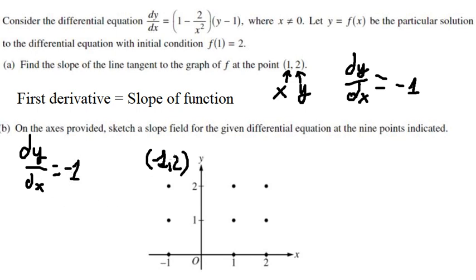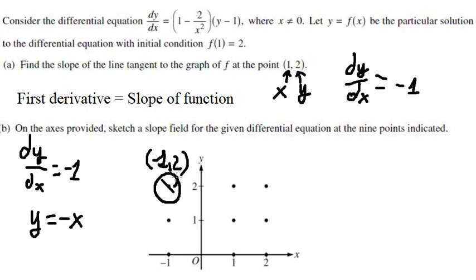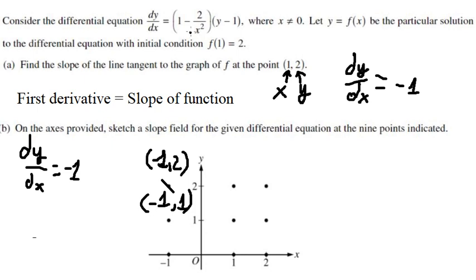So at negative 1, the line will go like this. This is about the slope of y equals to negative x, because the slope here is about negative 1. So we just draw the small line like y equals to negative x. Now for the next point, negative 1 and positive 1, we put those values here and we get dy over dx equals to 0, so the line will be horizontal like this.